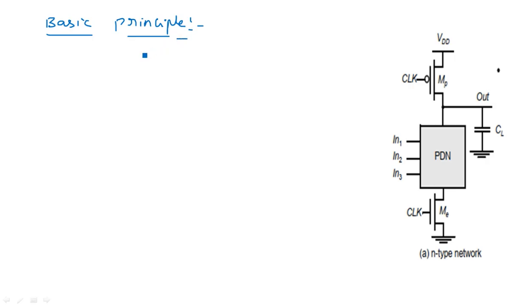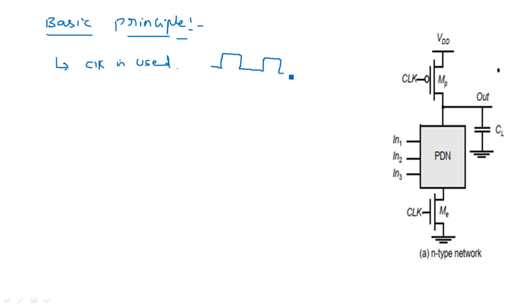In the basic principle, you are going to see how the construction of the dynamic CMOS circuit takes place and how a dynamic signal is applied to understand its operation. In dynamic CMOS circuit design, a clock signal is used because dynamic means changing with respect to time — the clock signal continuously changes up and down. We use an additional PMOS transistor in the pull-up device and an additional NMOS transistor in the pull-down which is applied with the clock signal.